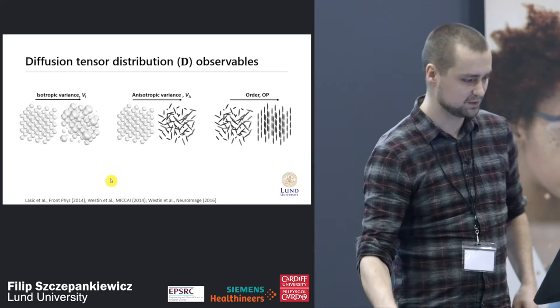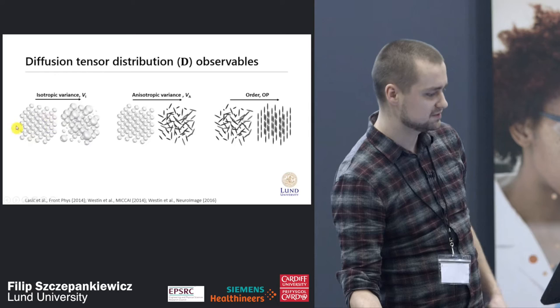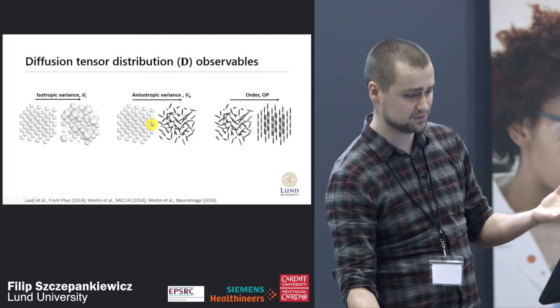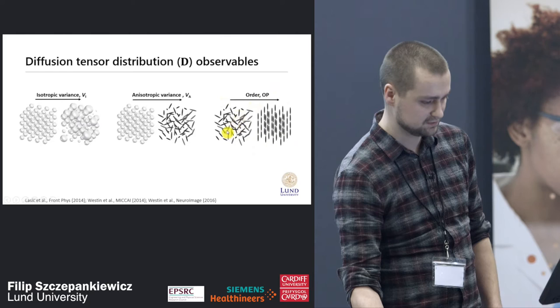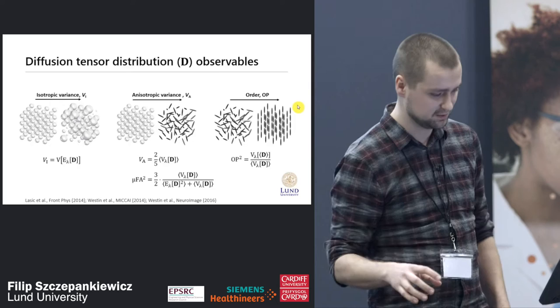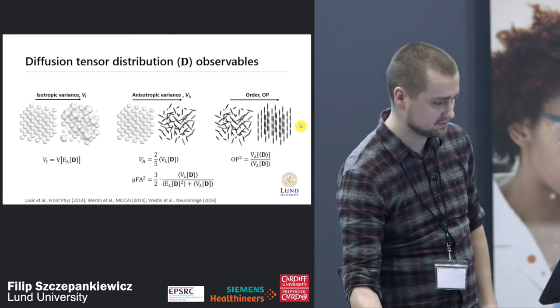This gives us access to a couple of cool parameters: the first being isotropic variance — something that brings tissue from a homogeneous state into a heterogeneous isotropic state; the anisotropic variance, which is the difference between isotropic and anisotropic domains; and the order parameter, which describes the order of the tissue. These can all be described from the distribution of diffusion tensors, and I'll show you parameter maps of these things shortly.